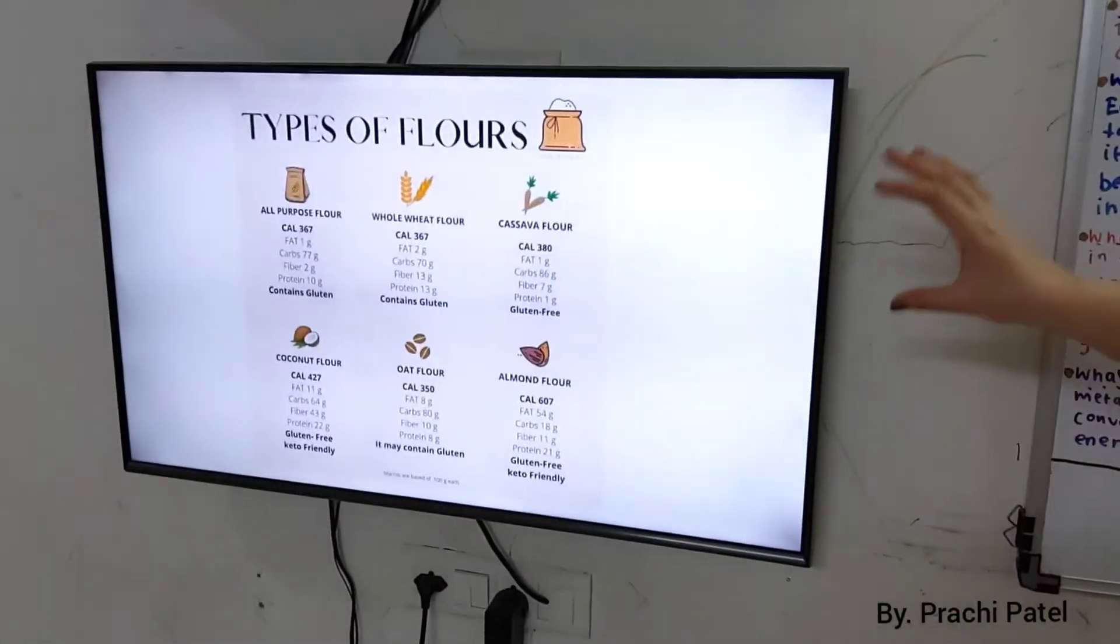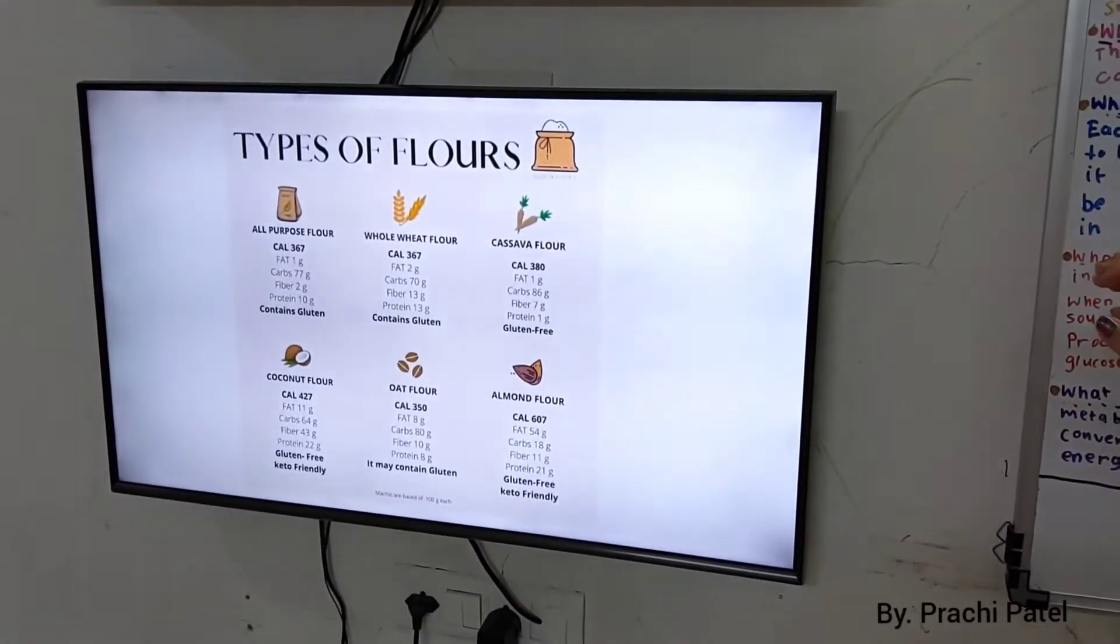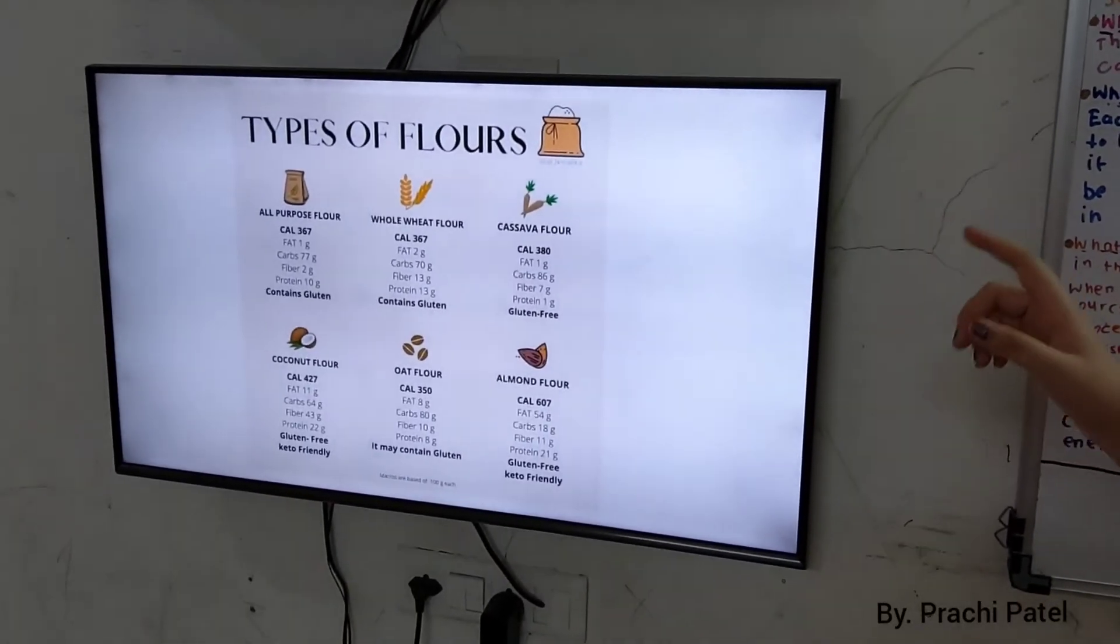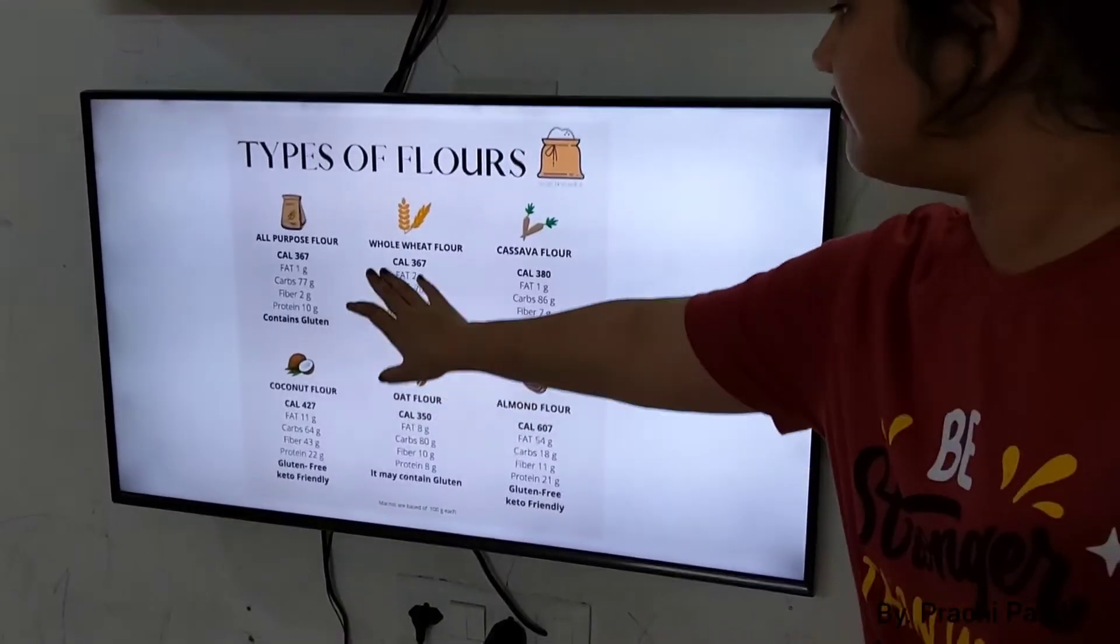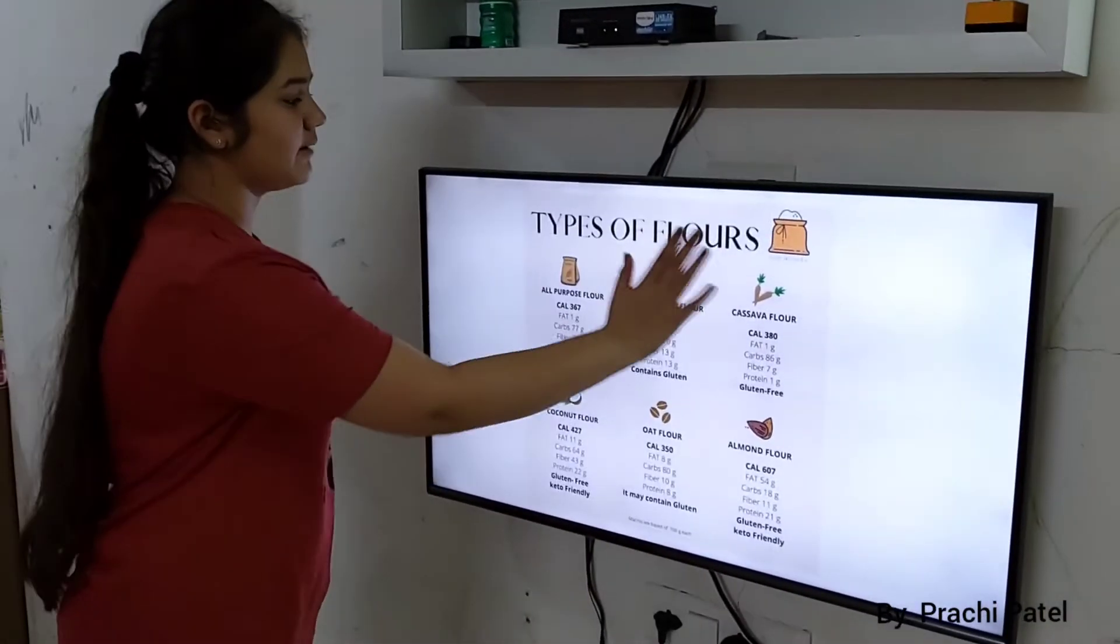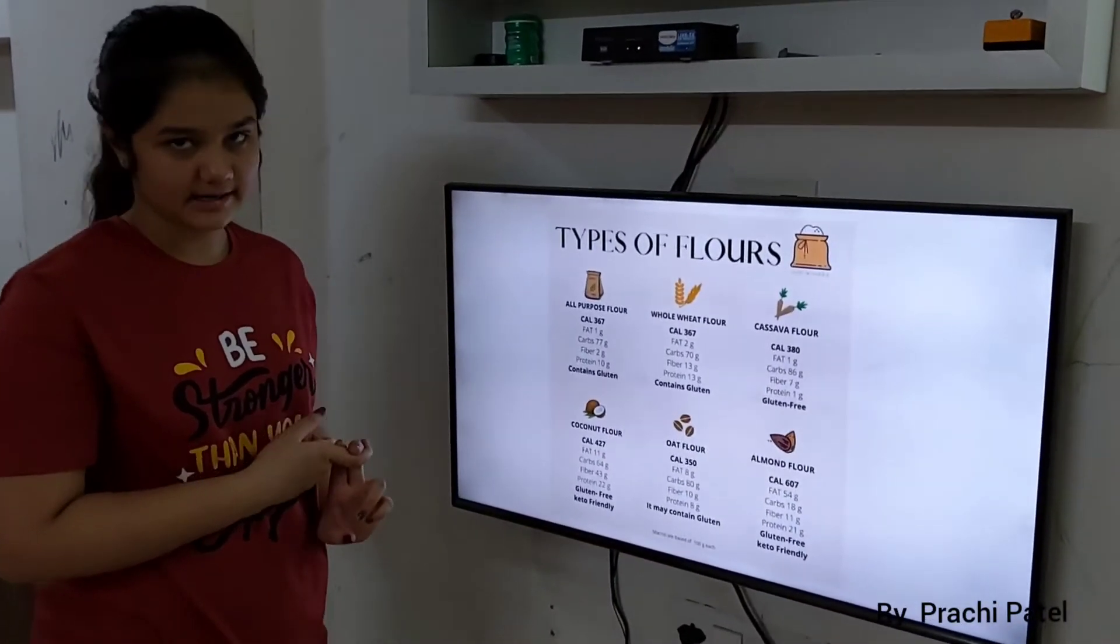So now, over here we have types of flours. All purpose flours, carbohydrates is 77 grams, and we have different whole wheat flour. Now we have types of flours over here.